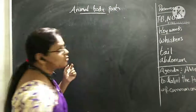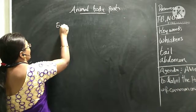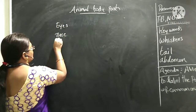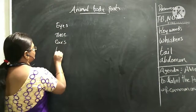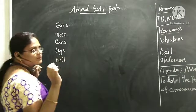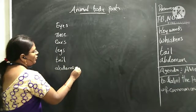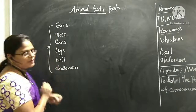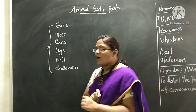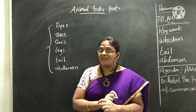Now tell me what are the common parts that animals have. All the animals have eyes, nose, ears, legs, tail, and abdomen. So all the animals have these parts commonly — eyes, nose, ears, tail, abdomen.